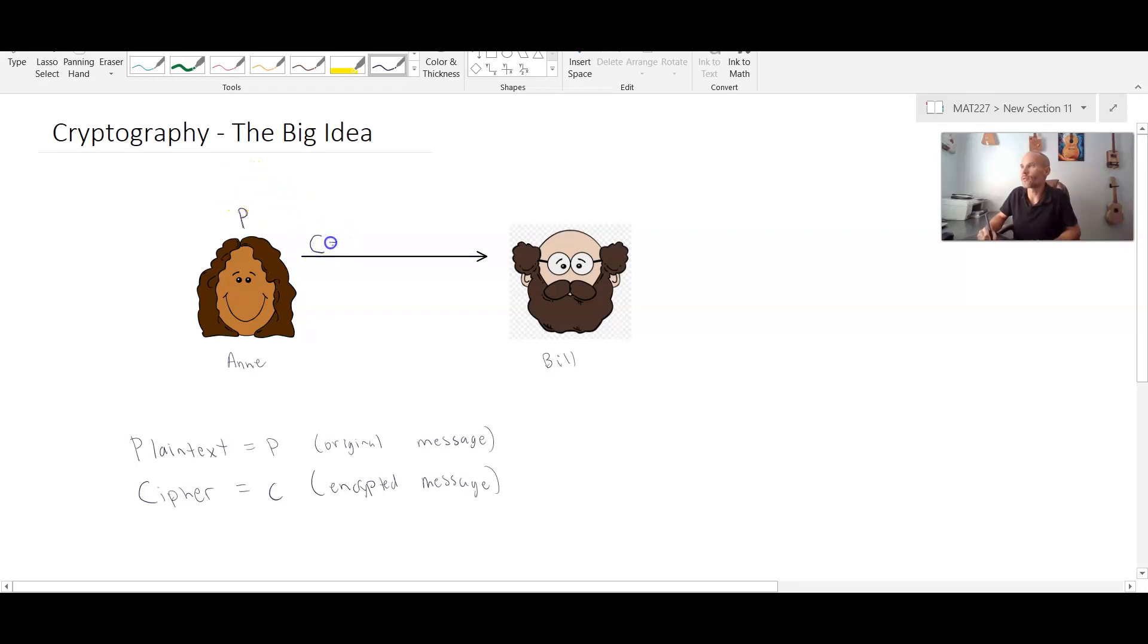And that cipher value is going to be some function involving the plain text value as well as what we call a public key. So we're going to have in our case a value of n and a value of e. And n is called the, n is defined to be the public key.